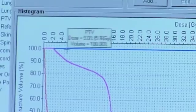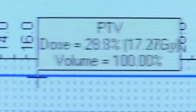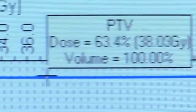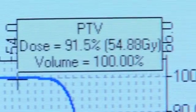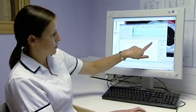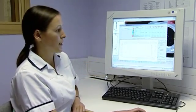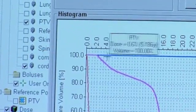This blue line here represents the PTV. And if we go all along the way to the top, we can see that here, 95.6% of a dose is actually received by 100% of the volume.